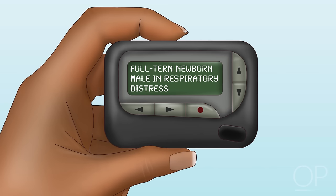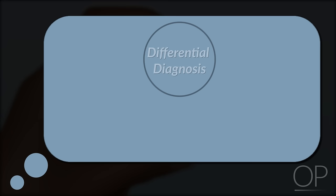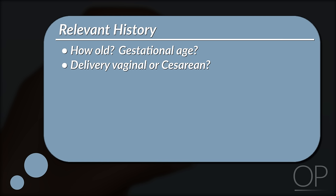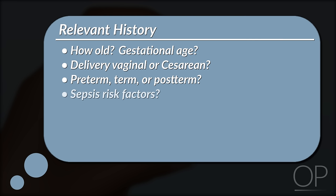You are paged to the nursery to examine a newborn described as being in respiratory distress. Immediately, you start running through the differential diagnosis in your head. What history do you need to know to guide your thinking? History that you will find useful to know includes: how old is the baby? What is the gestational age? Was the delivery vaginal or via cesarean section? Is this a preterm,